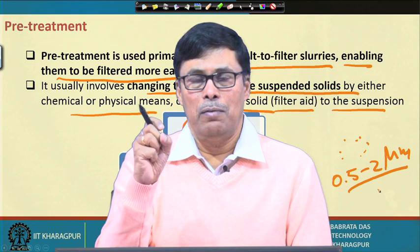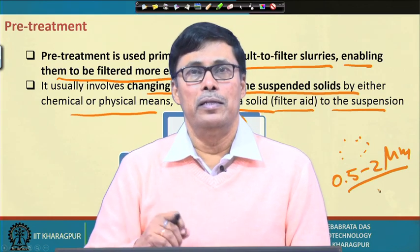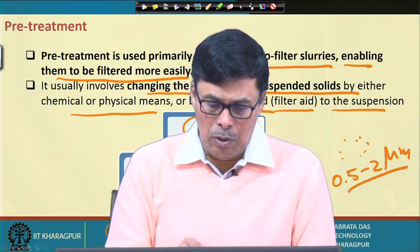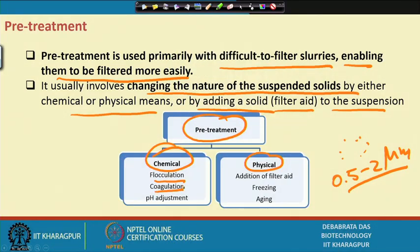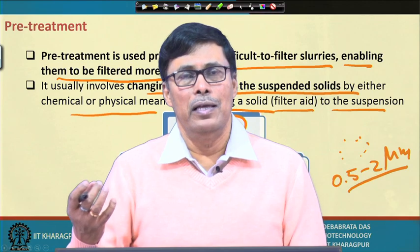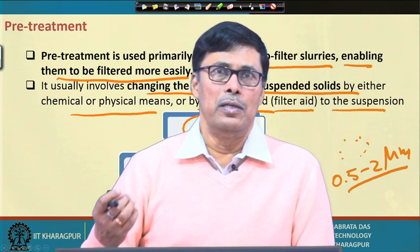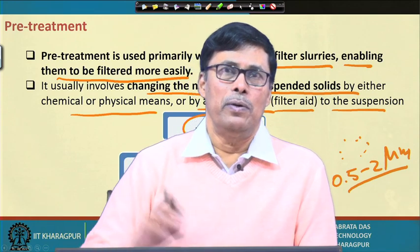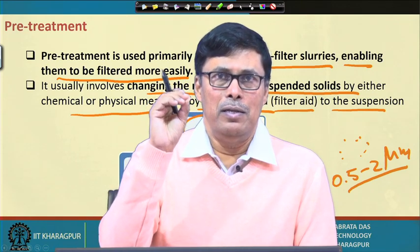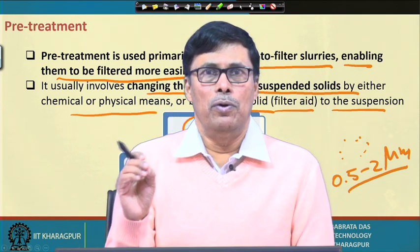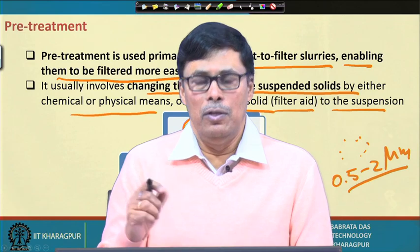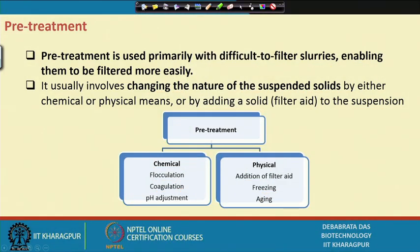When bacterial cells are very small, accumulation of cells increases particle size so they can settle more easily — this is called flocculation. Coagulation uses substances like alum, as in water treatment, to separate colloidal material. pH adjustment is another technique. A physical method is filter aid addition — for example, solca floc, a cellulosic material used to separate activated charcoal, which is fine black particles that must be removed from the product. Freezing and thawing is another method used.